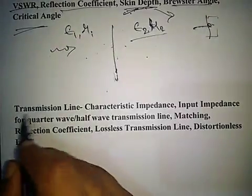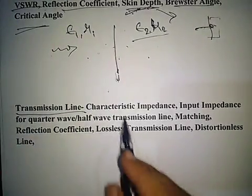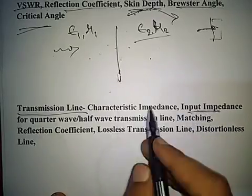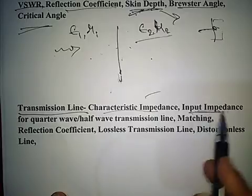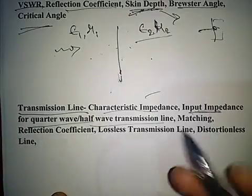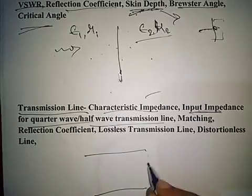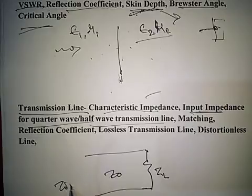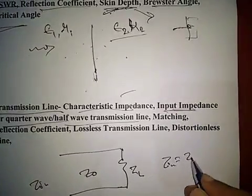Transmission lines are another topic from which questions are asked every year. Input impedance is most probable, and we must know characteristic impedance Z0. The input impedance formula Zin = Z0 * (ZL + j*Z0*tan(beta*L)) / (Z0 + j*ZL*tan(beta*L)) for quarter-wave (lambda/4) and half-wave (lambda/2) transmission lines must be known.